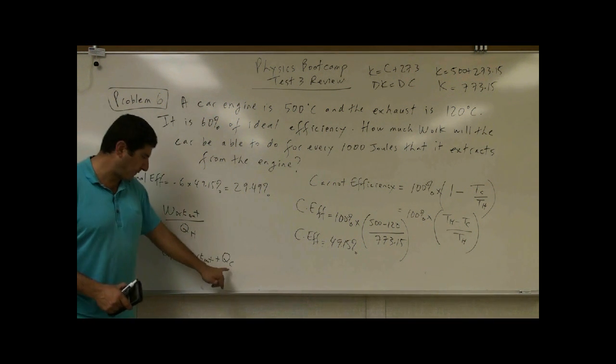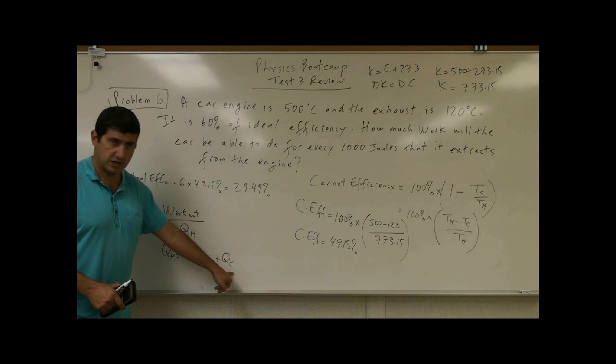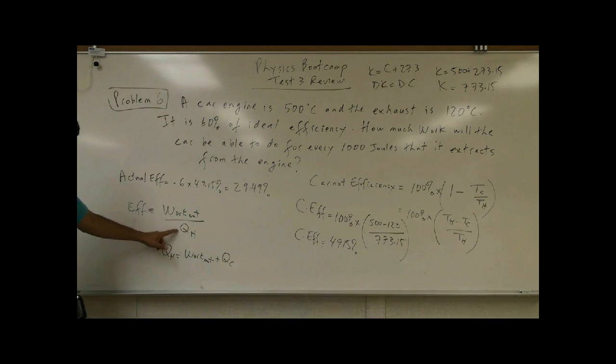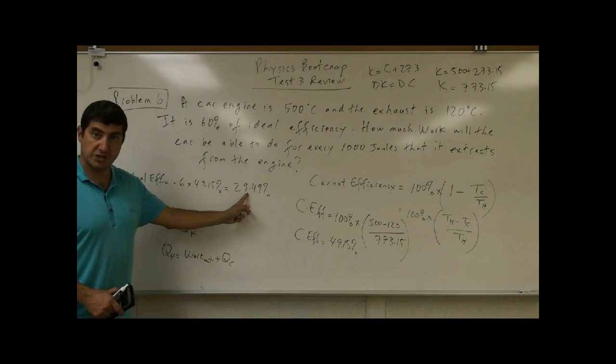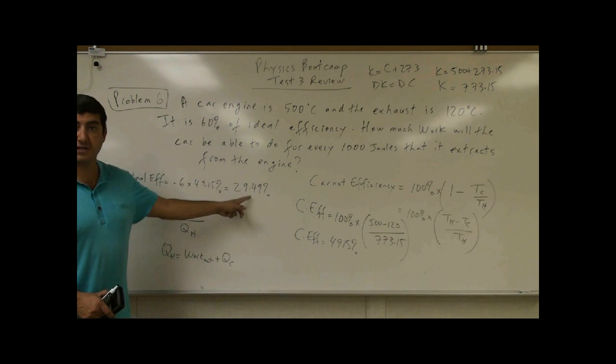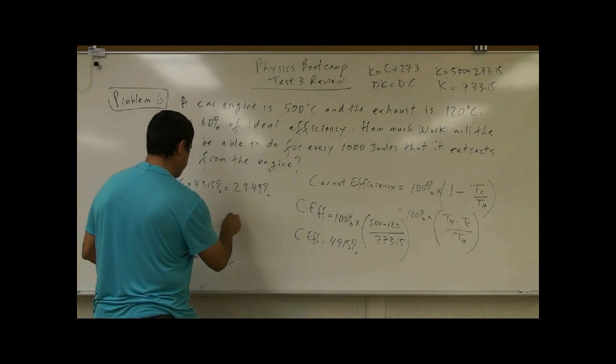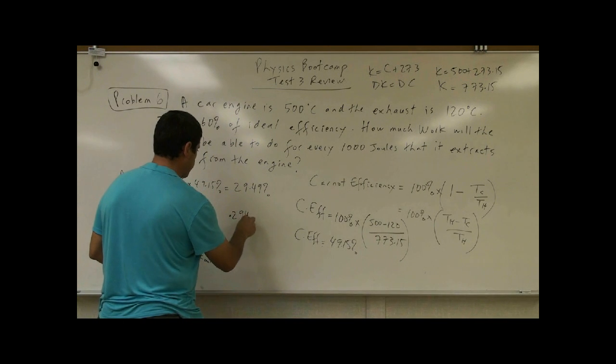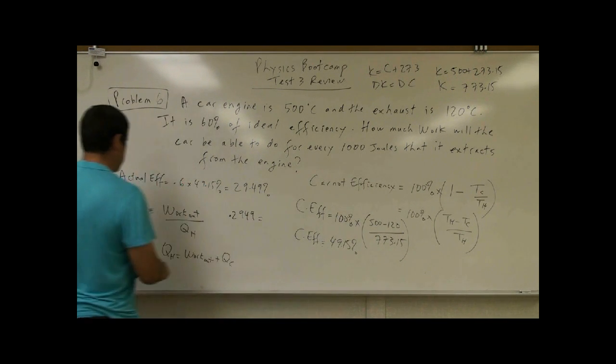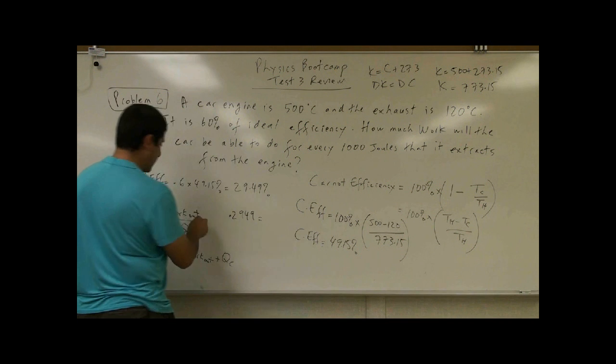So in this case, we don't actually need to solve for Q cold. All we're interested in is in the ratio of work out to QH. What is my actual efficiency? 29.49%. Express that as a decimal now. So 0.2949 equals work out, I don't know.